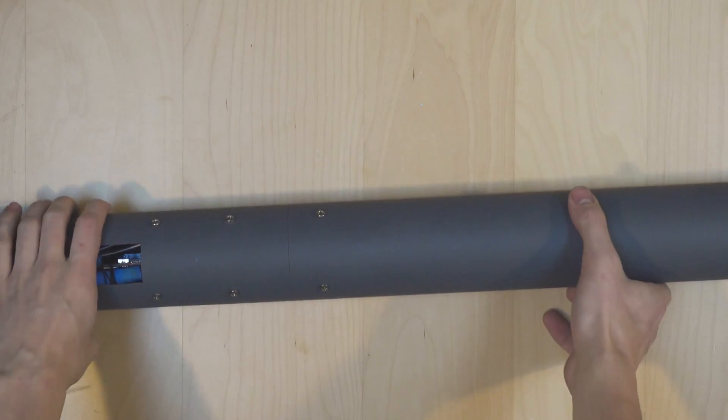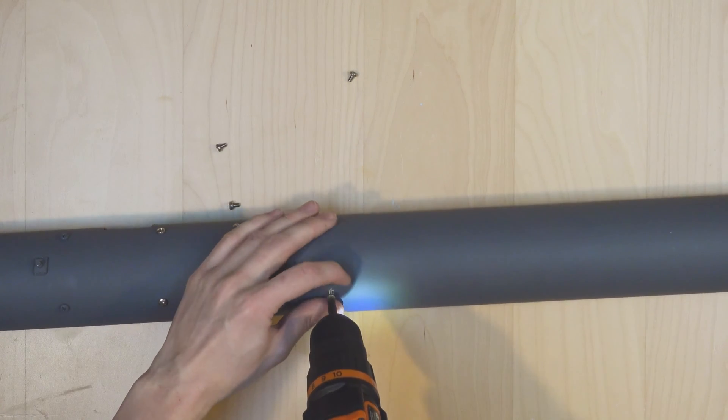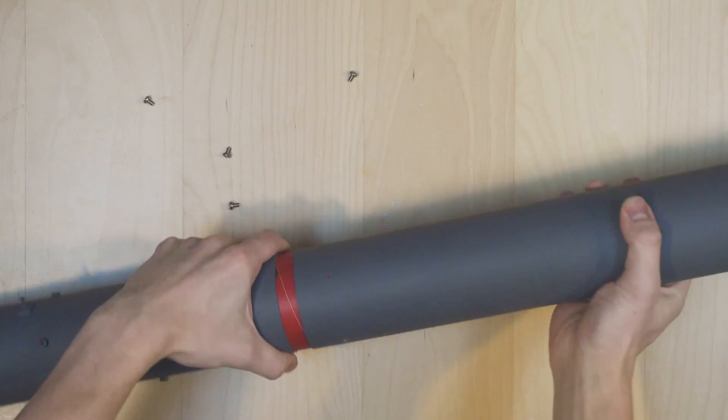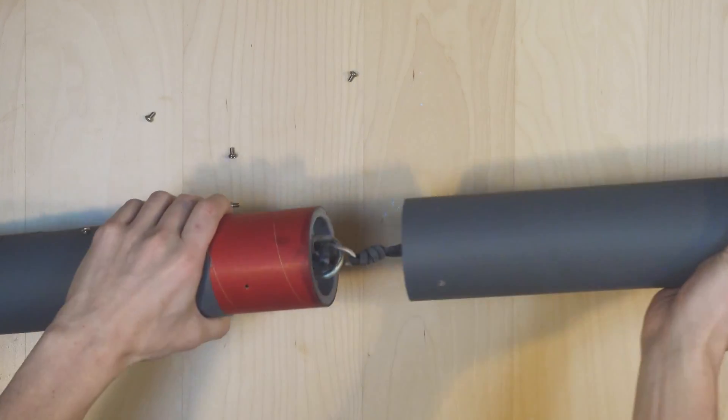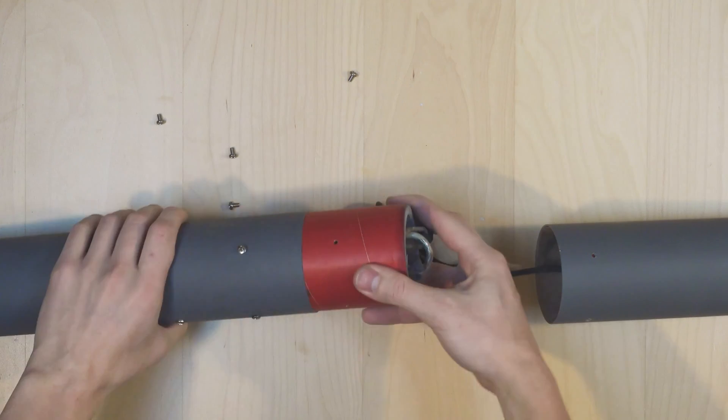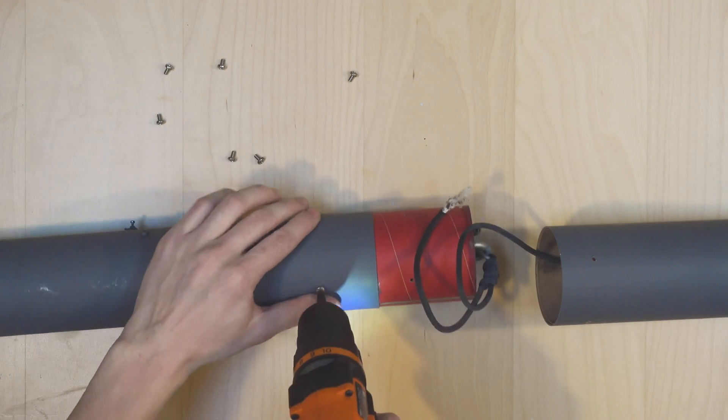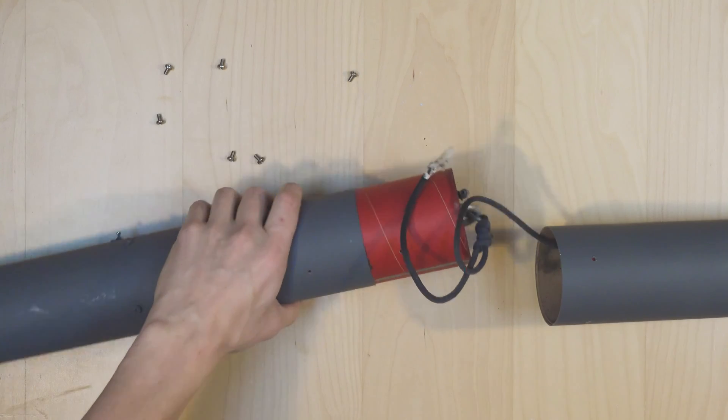After the test, I brought the rocket back inside, and I took it apart again. Inside this part of the rocket, you can see that the pyrocharge has left a good deal of soot in and around the whole area. This is normal for this type of ejection, so there's no need to worry.